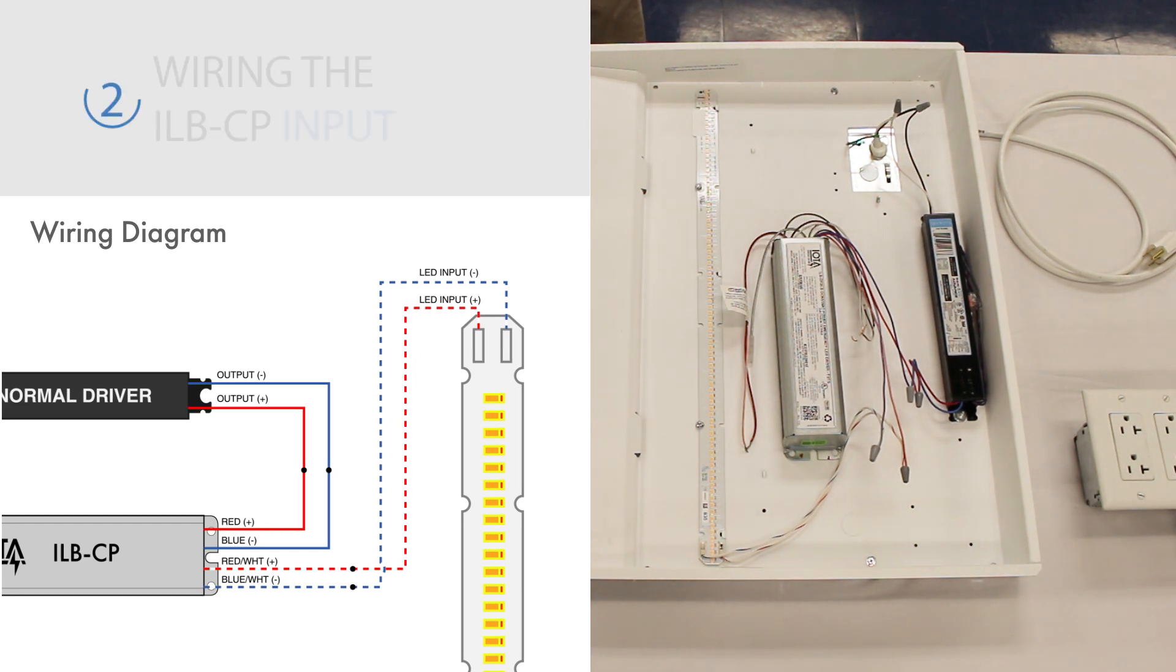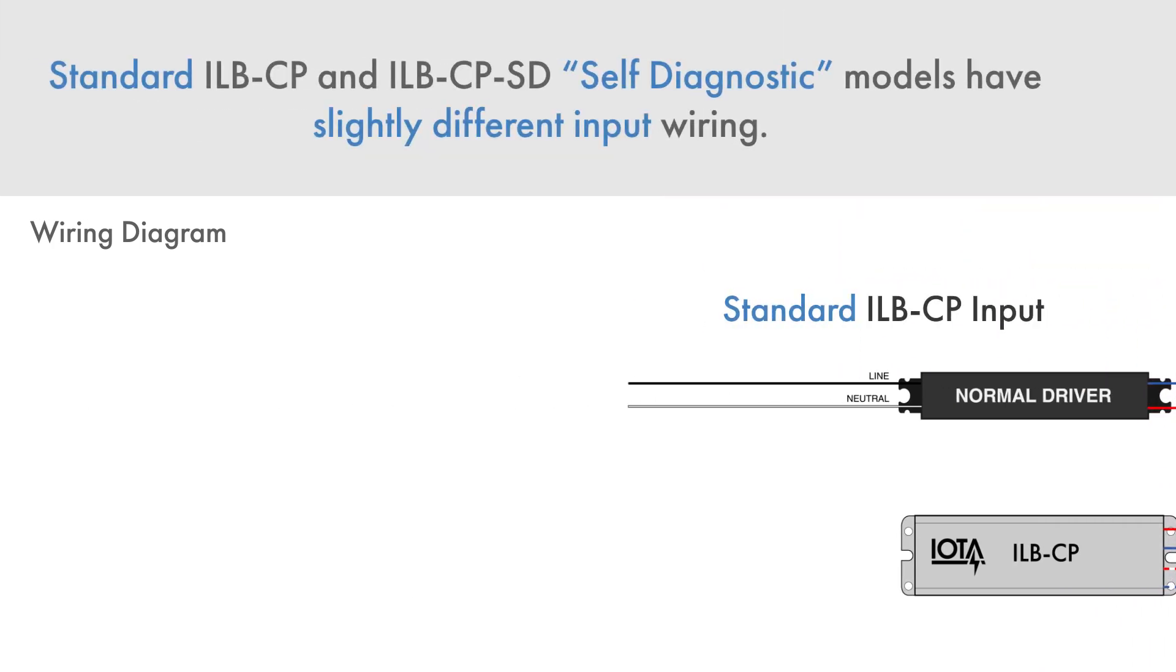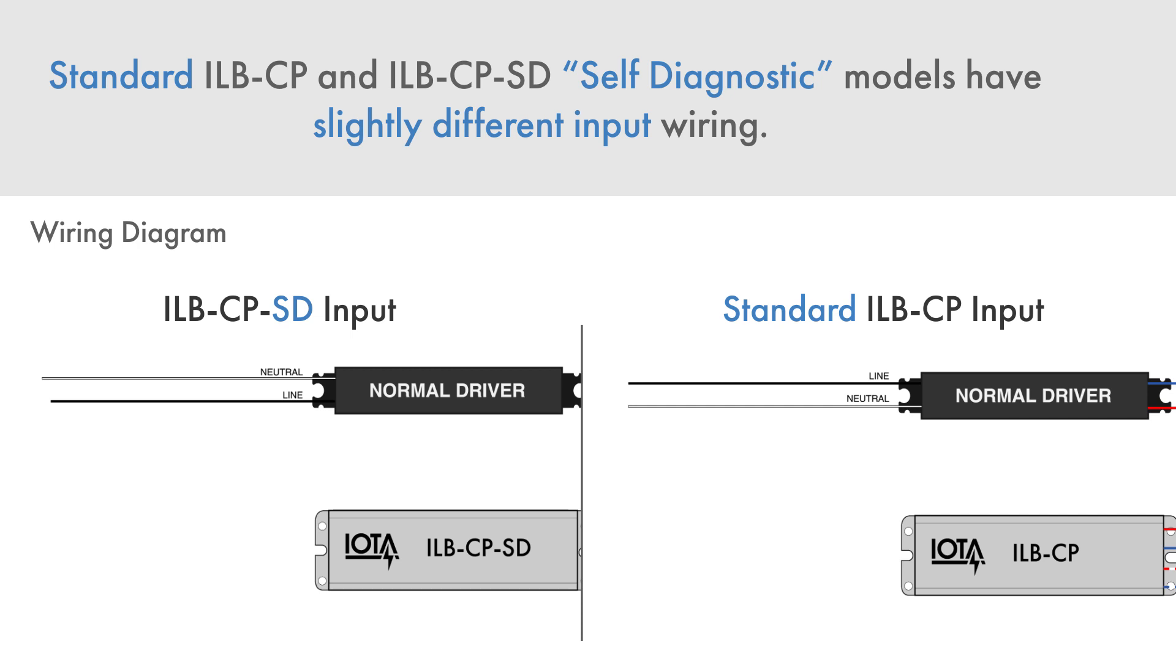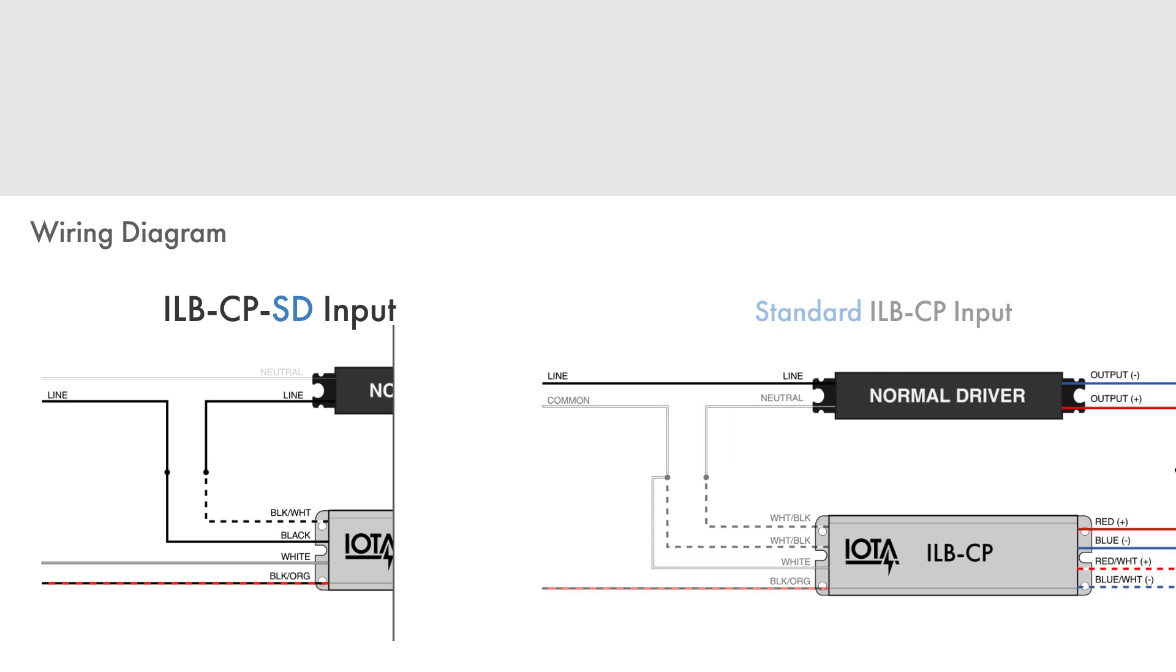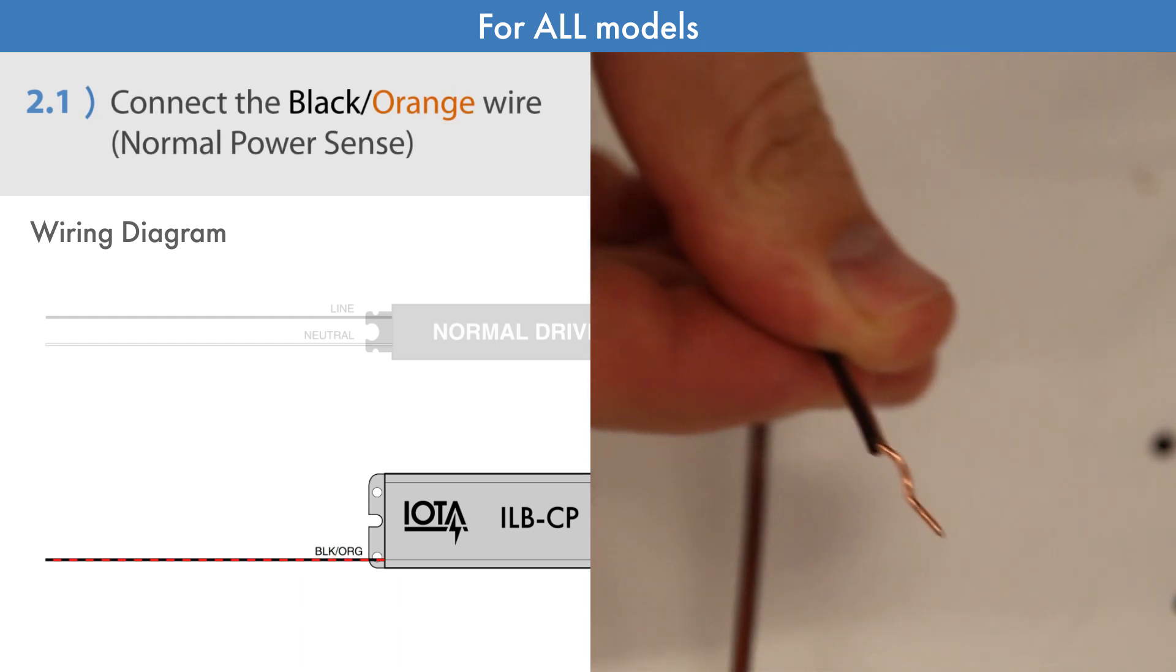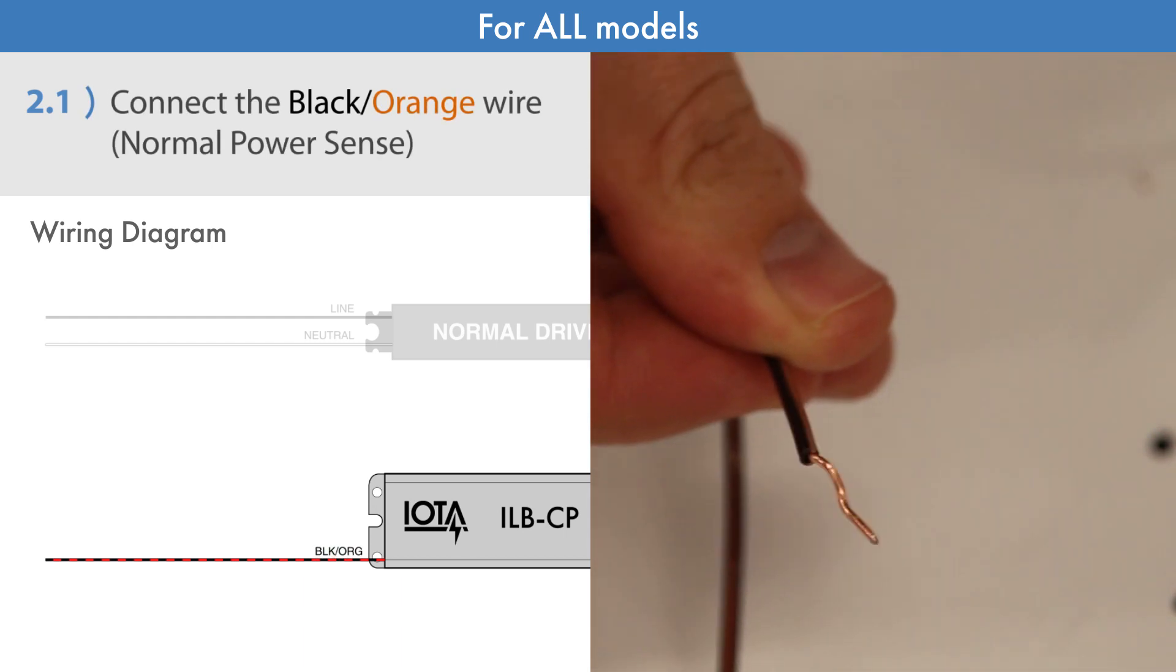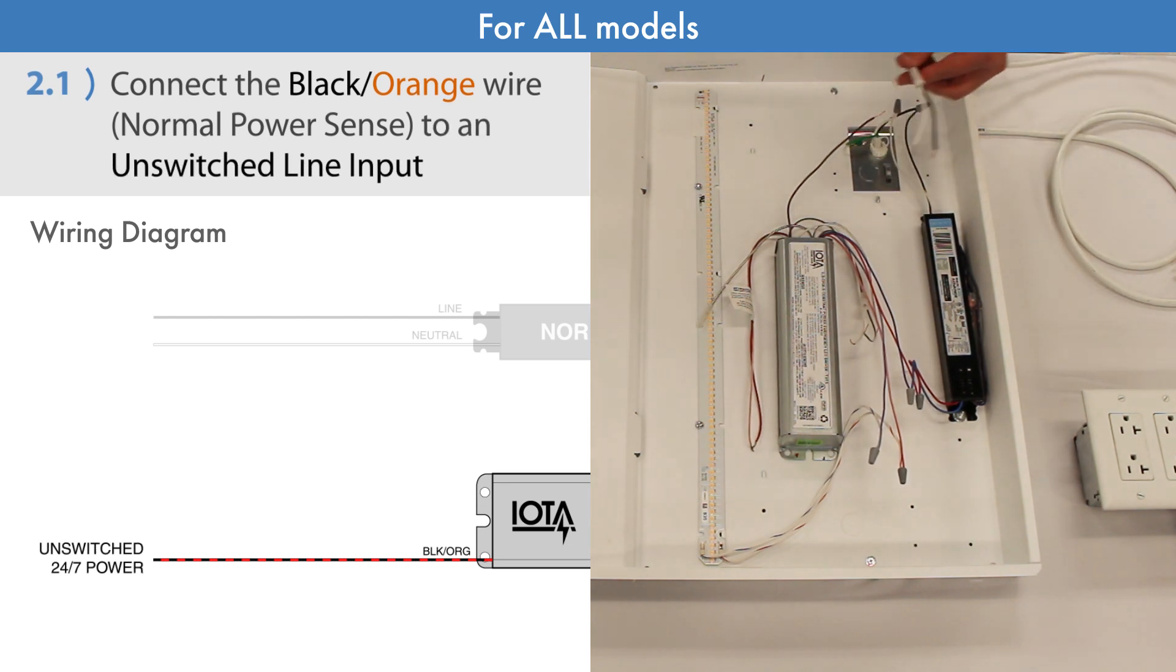We can now wire the ILB-CP input. Note, standard ILB-CP and ILB-CP self-diagnostic models have slightly different input wiring. We will address both here. First, for both models, we will address the black-orange wire which is the ILB-CP's normal power sense and battery charging input. This wire is used by the ILB-CP to both charge its internal batteries and detect whether normal power is supplying the fixture. Therefore, it needs to be connected to an unswitched line input.